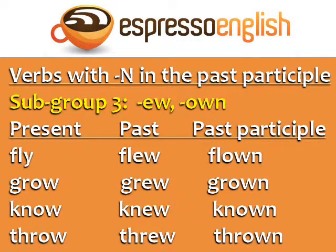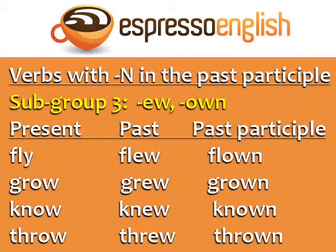Subgroup three: verbs ending in EW in the past and OWN in the past participle. Fly, flew, flown. Grow, grew, grown. Know, knew, known. Throw, threw, thrown.